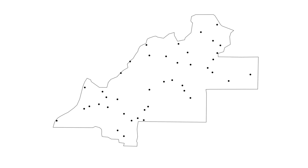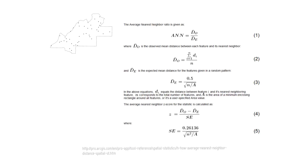Let's relate the average nearest neighbor index analysis and how we perform it to the statistic and the calculation itself. We're going to perform the calculation on this point data set — the trap locations of these biting fly traps on this study boundary. We'll look at the calculation using the equations provided on the pro.arcgis.com website. The average nearest neighbor analysis is going to perform a ratio, which is a comparison of the observed mean distance between our available points and an expected distance based on sample size and study area.